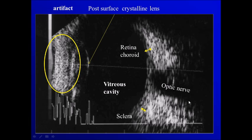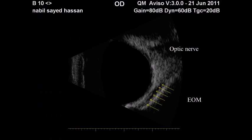Back here we have the optic nerve. There are not many interfaces for reflection, that's why it appears less reflective. While the surrounding area has higher reflectability from the loose connective tissue of the orbit, where we have connective tissue, blood vessels, lymphatics, etc.